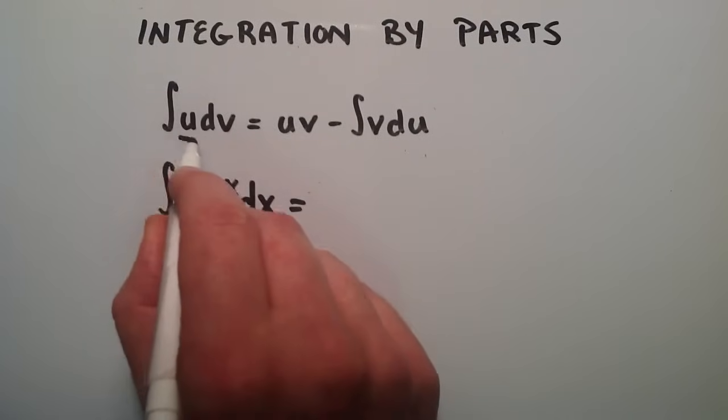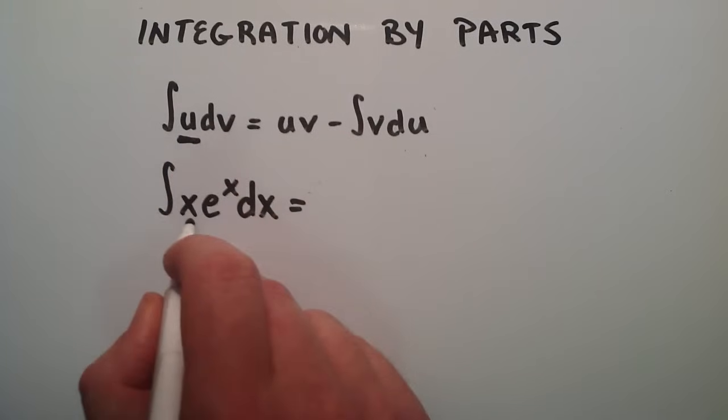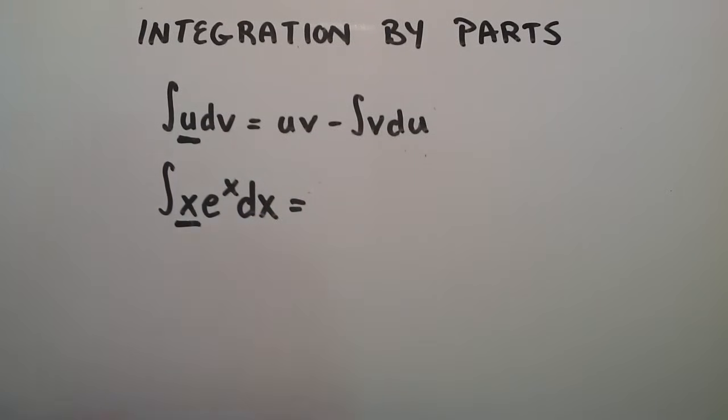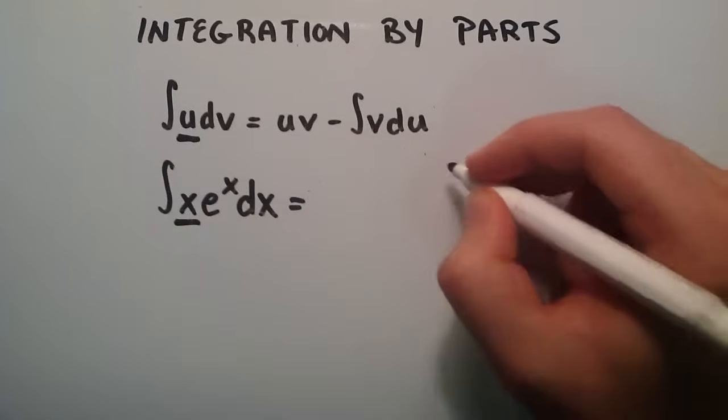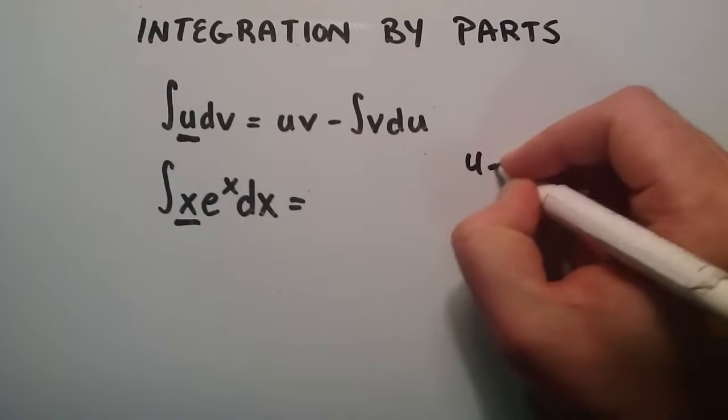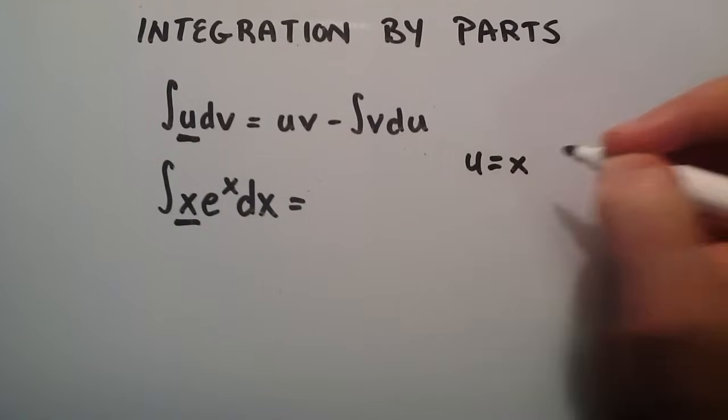If we take the derivative of x with respect to x, it will turn into the constant one. So we'll just go ahead and pick that for our u. So we'll just put that over here. u, we decide, is going to be x.